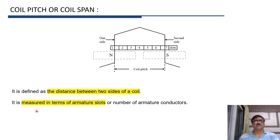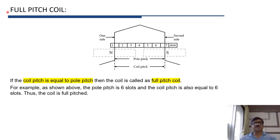Coil pitch is measured in terms of armature slots or number of armature conductors. Coil side 1 is in slot 1 and coil side 2 is in slot 7, so coil pitch equals 7 minus 1, which equals 6. In a full pitch coil, coil pitch equals pole pitch. If pole pitch equals 6 and coil pitch also equals 6, then this coil is called a full pitch coil.